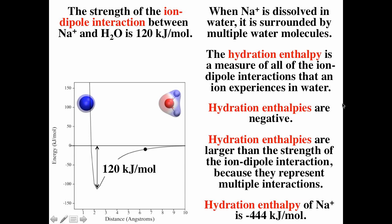Hydration enthalpies are negative. The larger the absolute value of the hydration enthalpy, the stronger the ion-dipole interaction. The interaction between one sodium ion and one water molecule is about −120 kJ/mol, but the hydration enthalpy for sodium is −444 kJ/mol. In water, water molecules are coming and going off the sodium, so on average you have about 6 water molecules, but because of constant motion and sharing, it's not simply 6 × 120 kJ/mol.